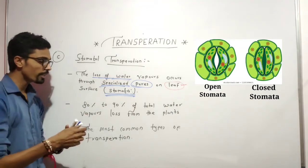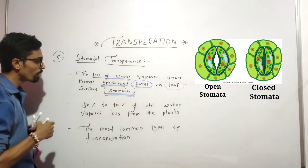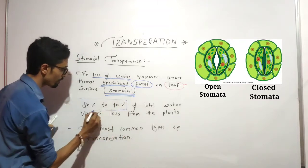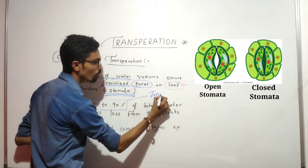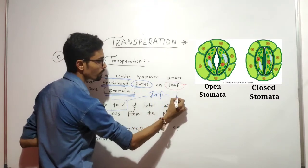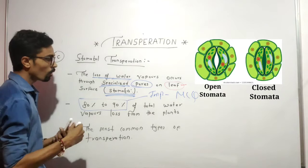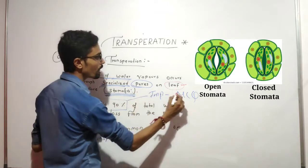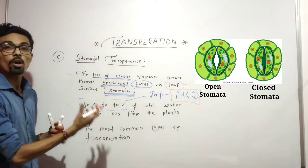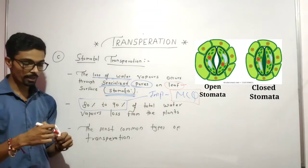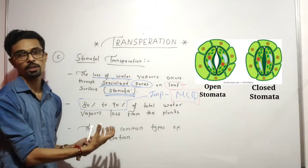The percentages are important — you have to remember the percentages. They are important for MCQs. The percentage to remember is that 80 to 90% of water loss occurs by stomatal transpiration.